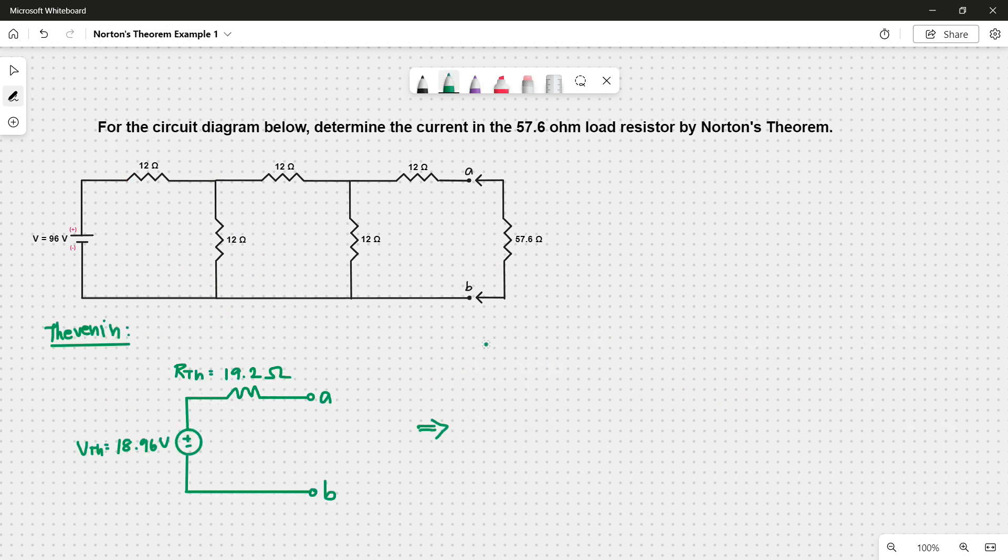This is now our thevenin equivalent circuit. Transforming this into Norton, we just simply redraw and convert the voltage source into current source by dividing it by its thevenin resistance. Hence, we get I-Norton as 0.98 amps, and the resistance will still be the same but parallel, 19.2 ohms.